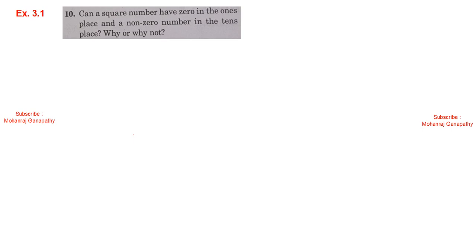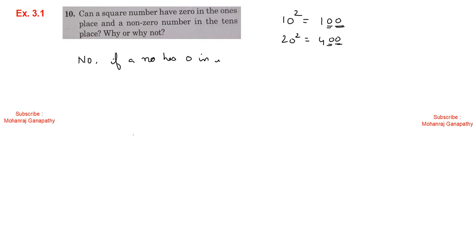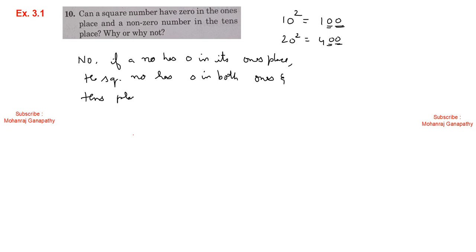Exercise 3.1, sum number 10: Can a square number have 0 in the 1's place and a non-zero number in the 10's place? The answer is no. For example, 10 squared equals 100 — units place is 0 and tens place is also 0. 20 squared equals 400 — units place is 0 and tens place is also 0. So if a number has 0 in its 1's place, its square has 0 in both the 1's and 10's place.